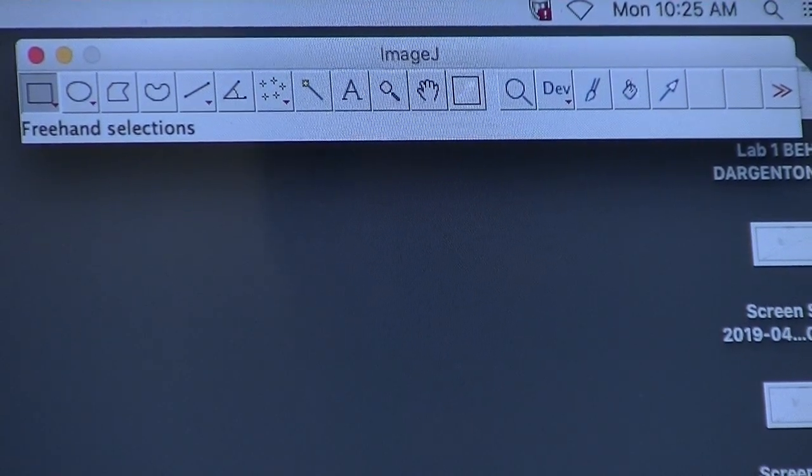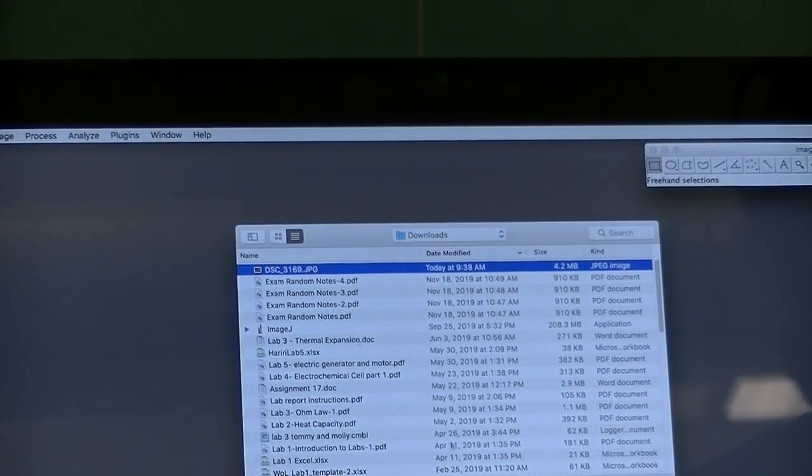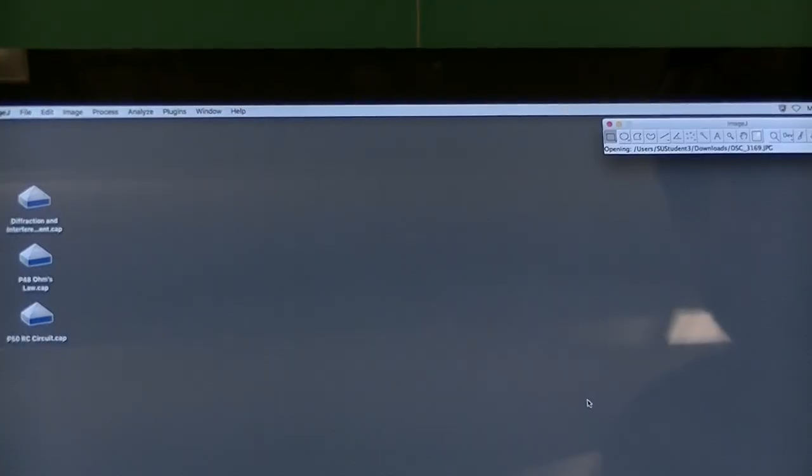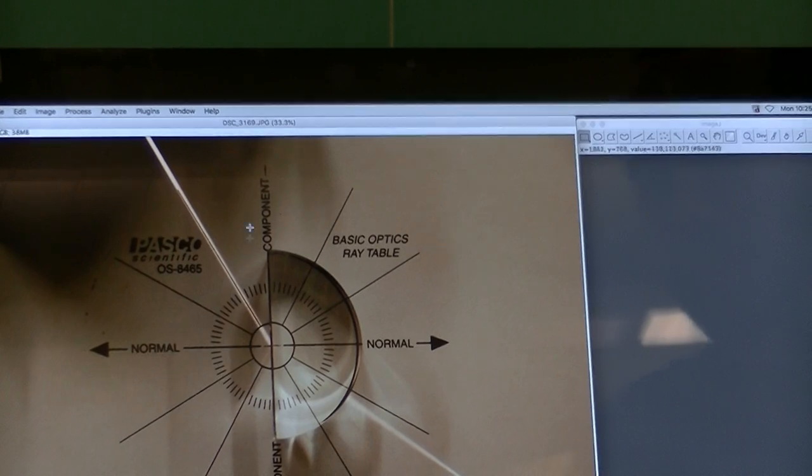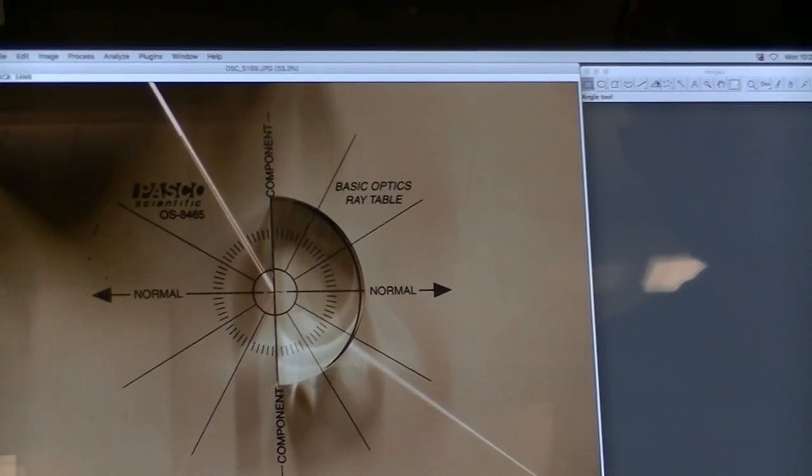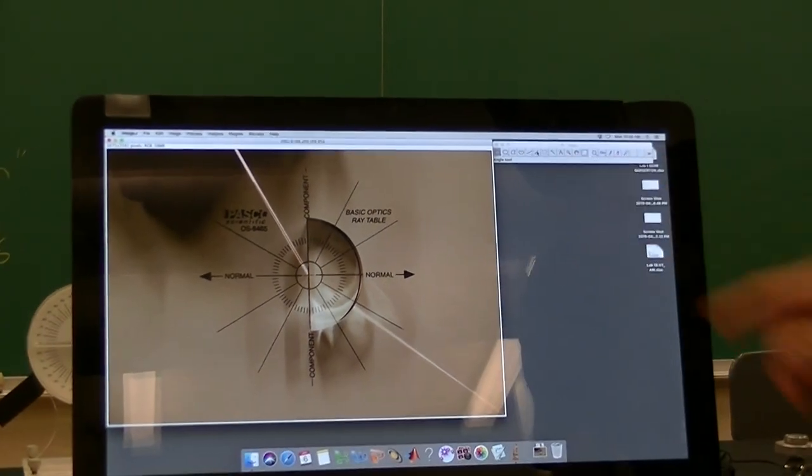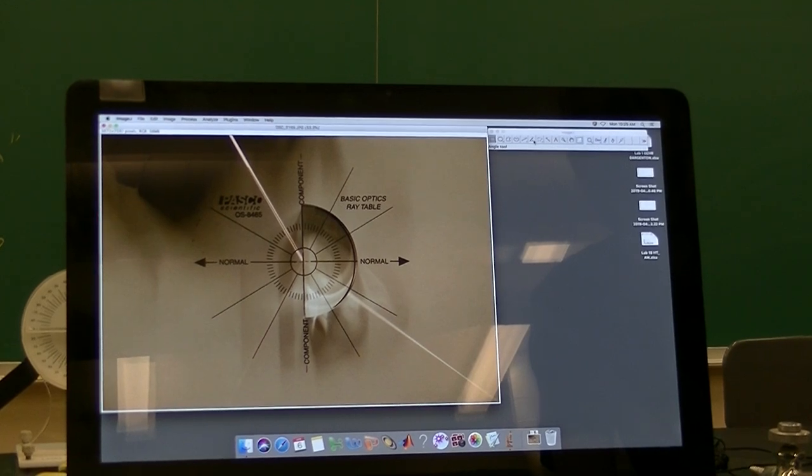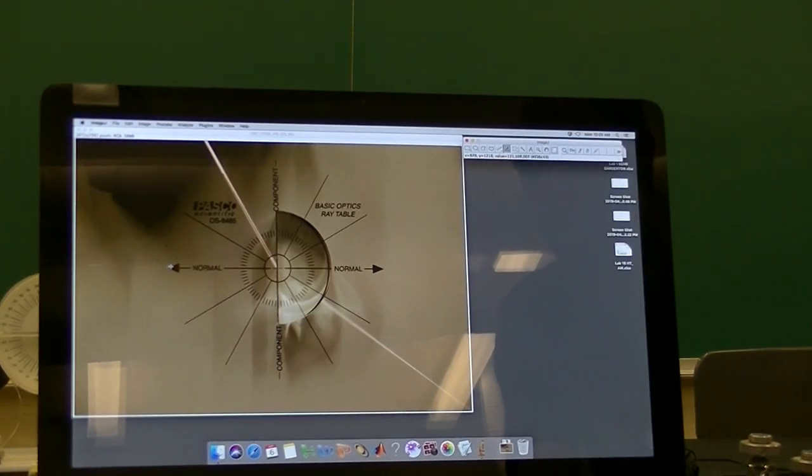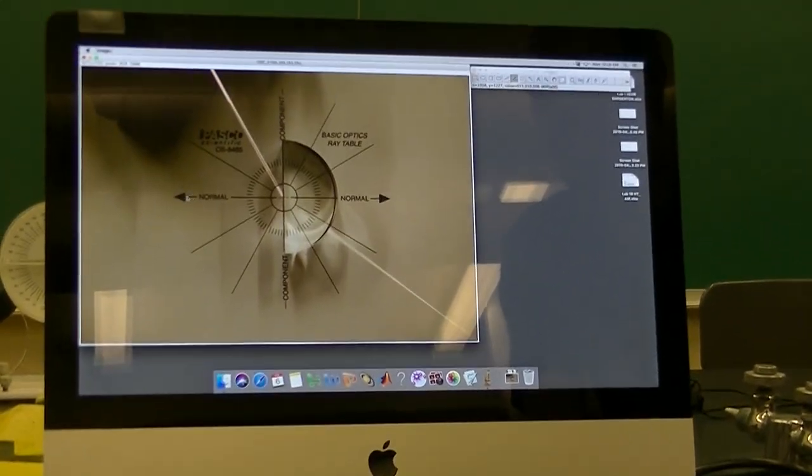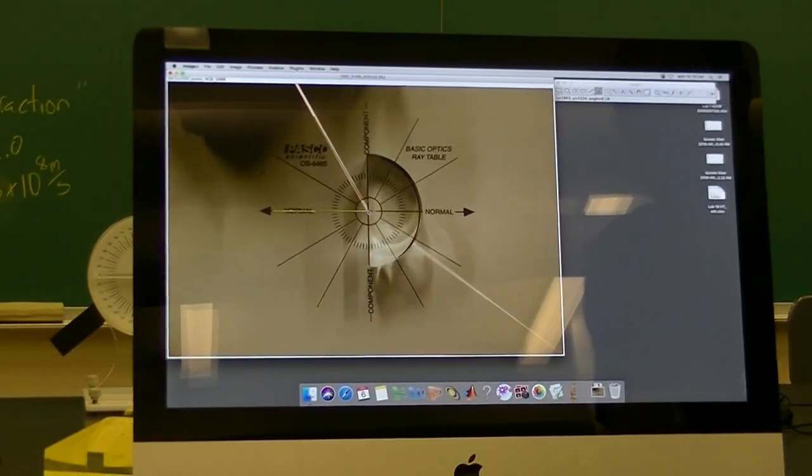if I open one of the pictures that you can find on canvas, it'll look something like that. Then we'll choose this little angle tool, it looks like an angle, and make a few measurements. I'm going to click, click, click, you're clicking the start,